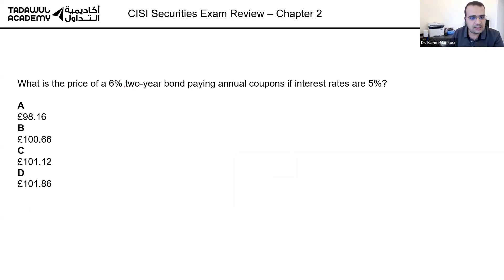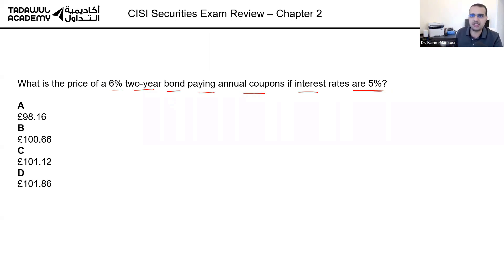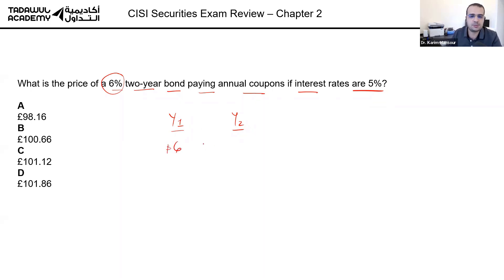First question: what is the price of a six percent two-year bond paying annual coupons if interest rates are five percent? You price bonds by looking at how much cash they get — you discount those incoming cash flows. In year one you get six dollars in coupon, and in year two you get six dollars in coupon plus the redemption of nominal value, so you get 106 in the second year.